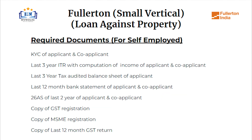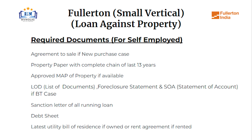Required documents for self-employed applicants include: KYC of applicant and co-applicant, last 3-year ITR with computation of income for applicant and co-applicant, last 3-year tax audited balance sheet, last 12-month bank statement of applicant and co-applicant, 26-AS of last 2 years, copy of GST registration, copy of MSME registration, copy of last 12-month GST return, agreement to sale if new purchase case, and property papers with complete chain of last 13 years, approved map of property if available.